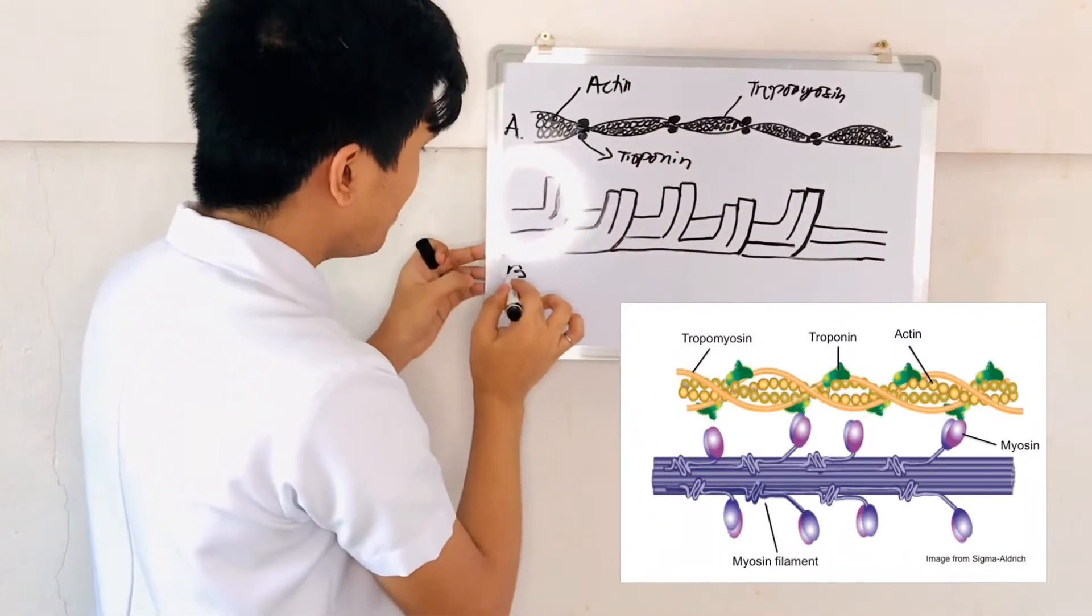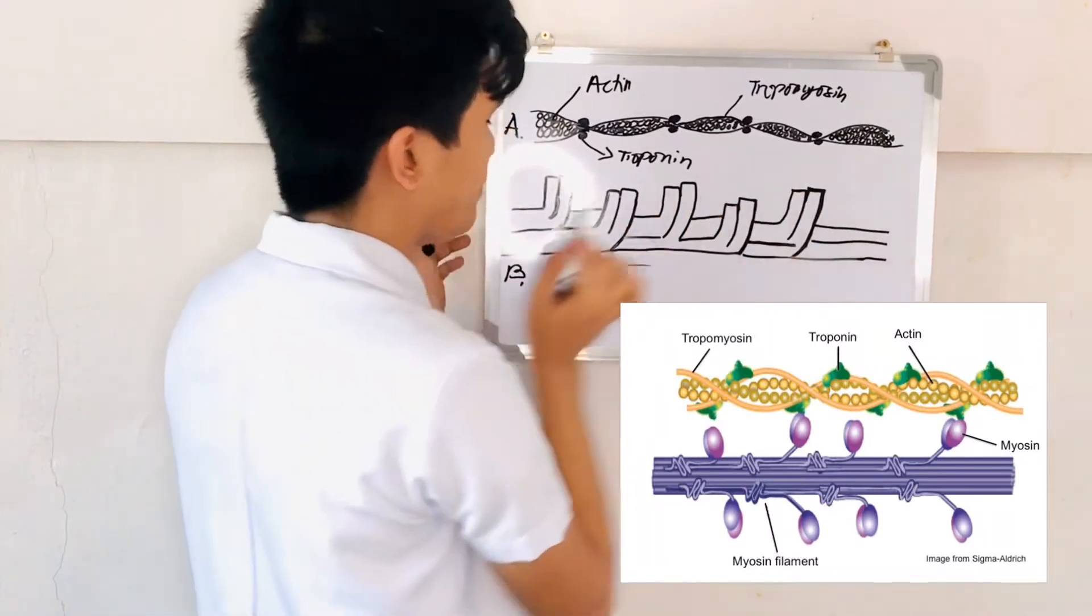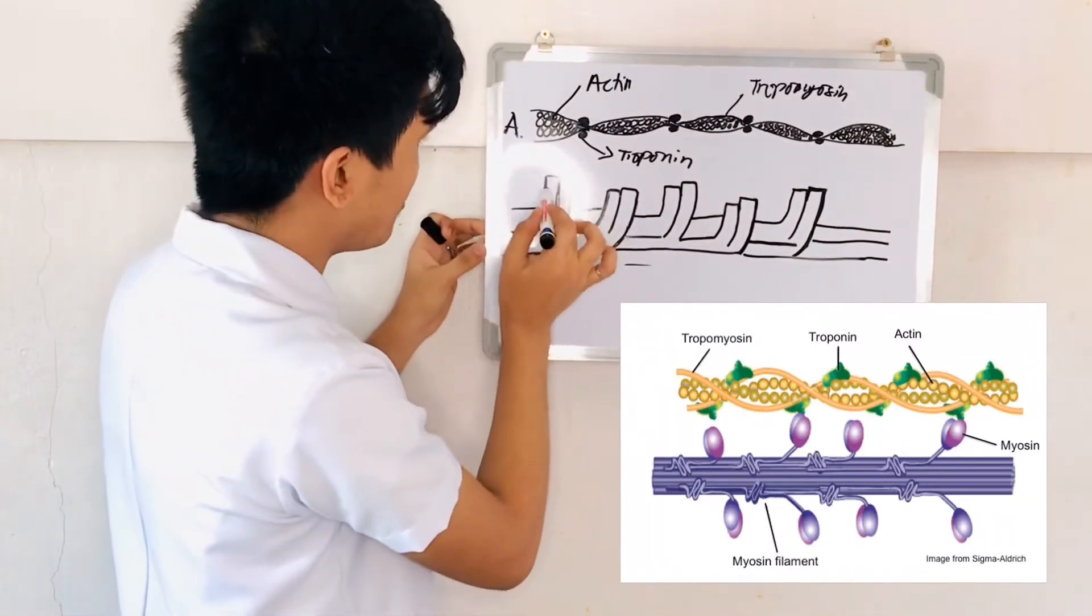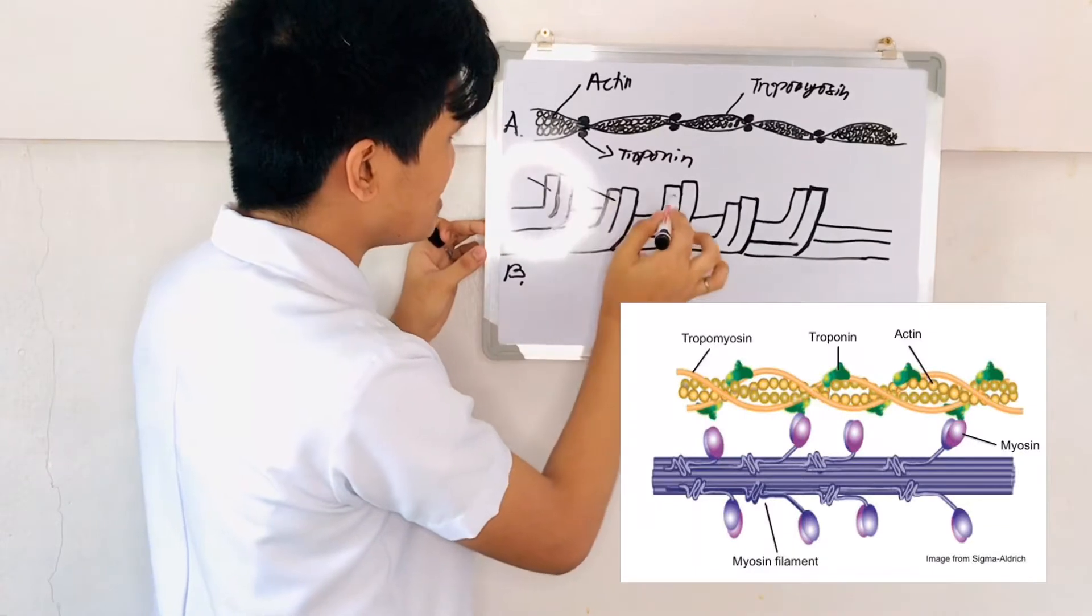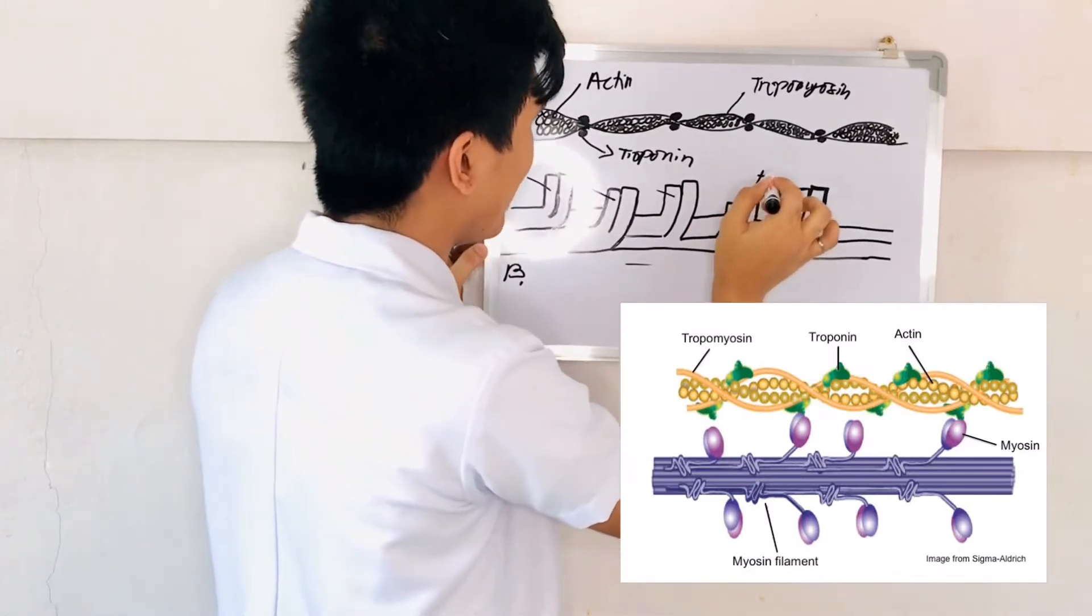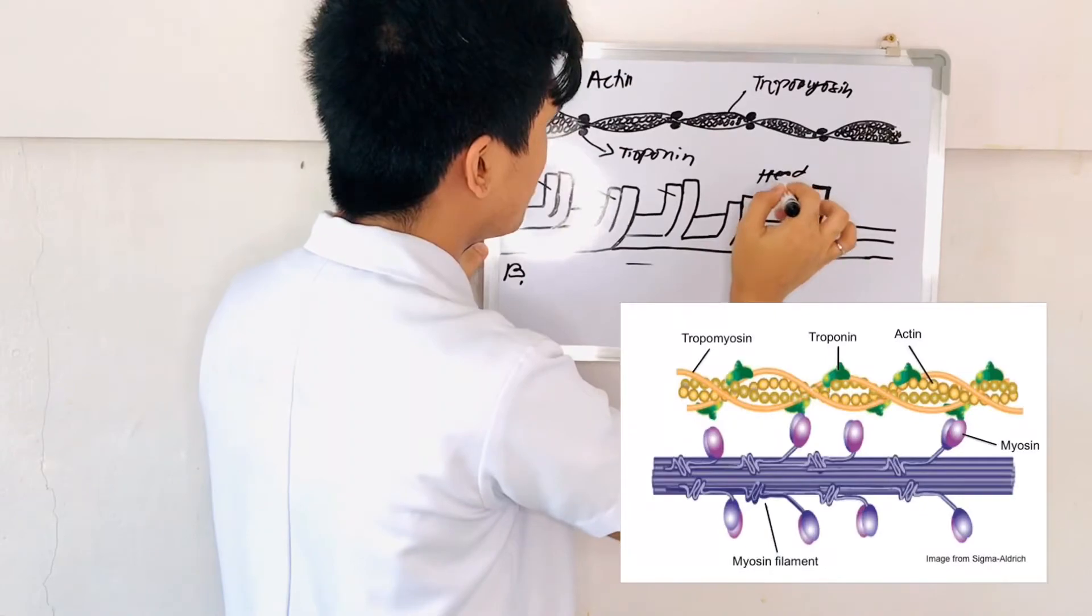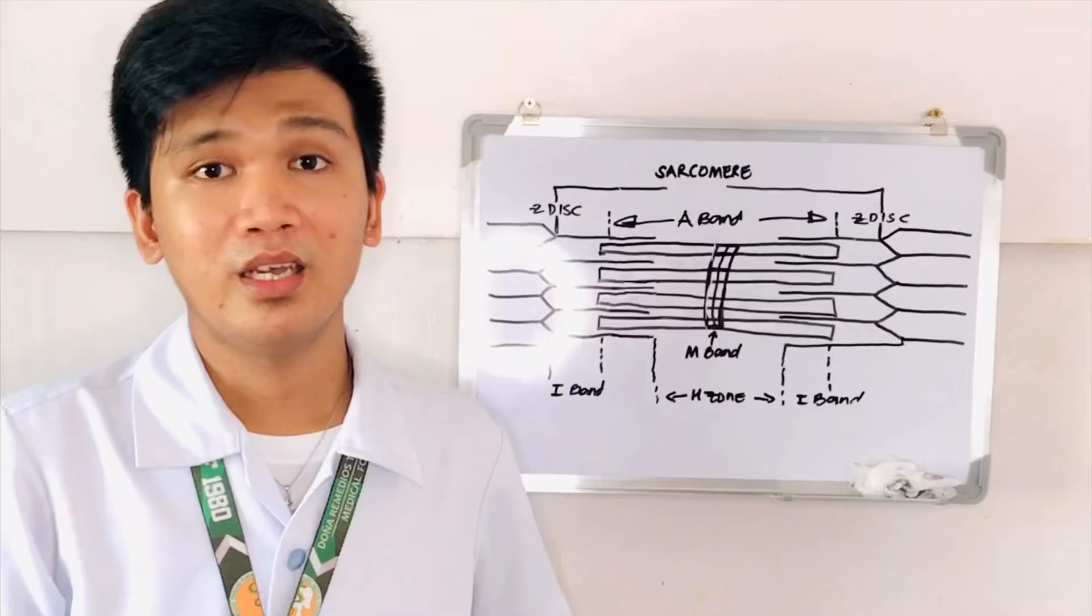While this one here, which is the myosin filament of protein, it shows the head groups. This and this, this and this are the head groups.